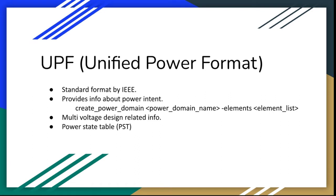In this file, we can provide information like what all cells will be driven by a common supply. This is achieved using the create_power_domain command, which takes in domain name and elements as arguments, along with some other fields.